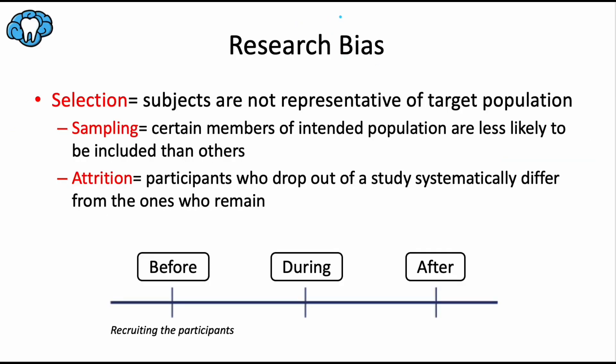Research bias refers to systematic errors in the design, conduct, analysis, or interpretation of a study that lead to incorrect or misleading conclusions. Bias can affect the validity and reliability of research findings, potentially skewing results in a particular direction. So it's really important to try to limit it wherever possible, or at least acknowledge it in the discussion section of our research paper.